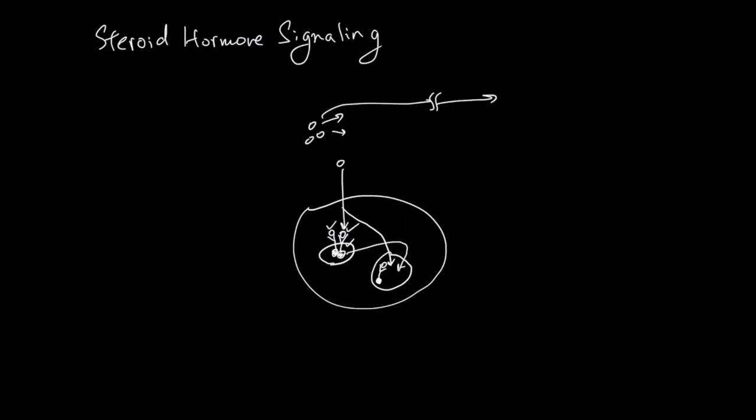Go to the nucleus and change the gene expression of the cell. Some proteins remain within the nucleus. Again, upon binding with this steroid hormone, dimerization or other structural change happens. And this molecule can now directly act as a transcription factor and again change the gene expression.